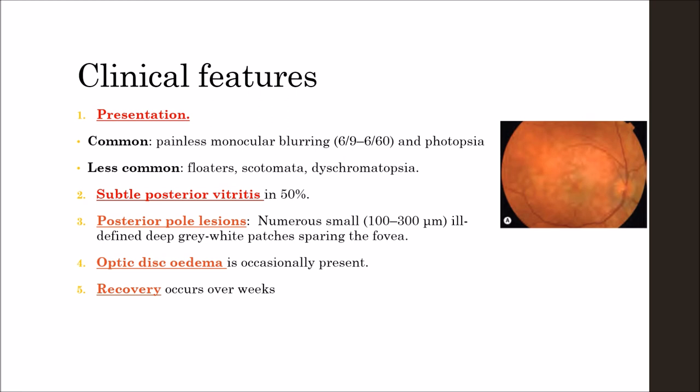Patients have posterior fundus lesions which are numerous small, 100 to 300 microns, ill-defined deep gray-white patches sparing the fovea, which has a characteristic orange granular appearance and a dull reflex. As you can see in the figure, there are multiple patches on the fundus picture spread over the posterior polar area, but they are sparing the foveal area.